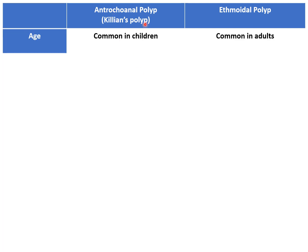Antrochoanal polyp is also called Killian's polyp. Regarding the age of affection, antrochoanal polyp is seen in children at a younger age, while ethmoidal polyp is generally common in adults.